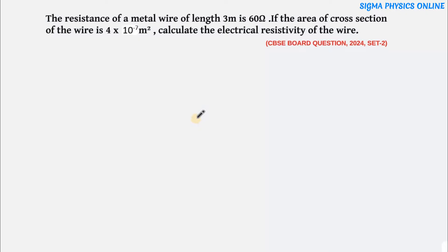It's a question from the electricity chapter. The question is: the resistance of a metal wire of length 3 meters is 60 ohms. If the area of cross section of the wire is 4 into 10 to the power minus 7 meter square, calculate the electrical resistivity of the wire.